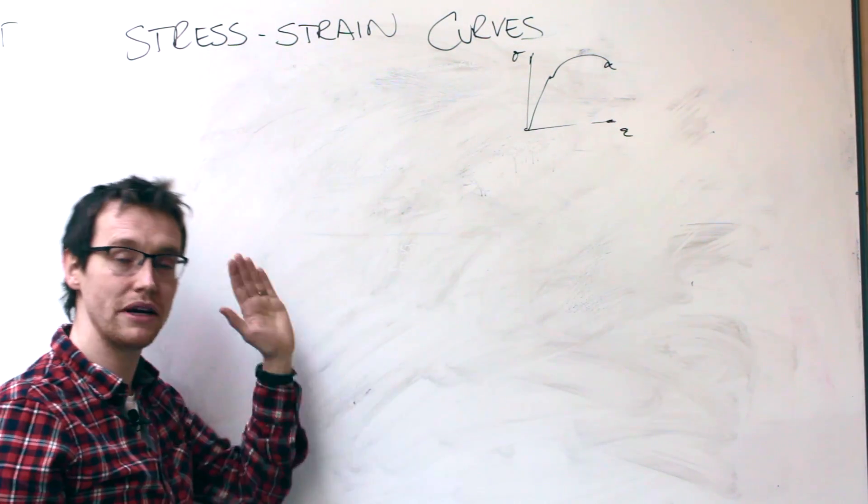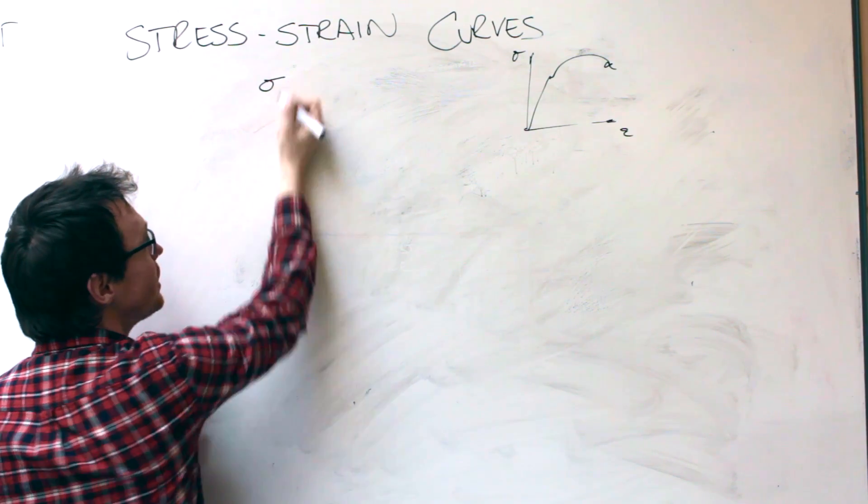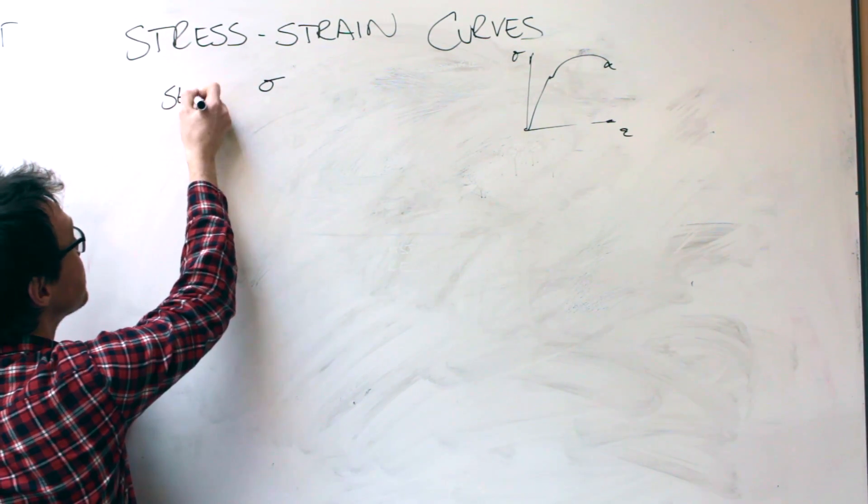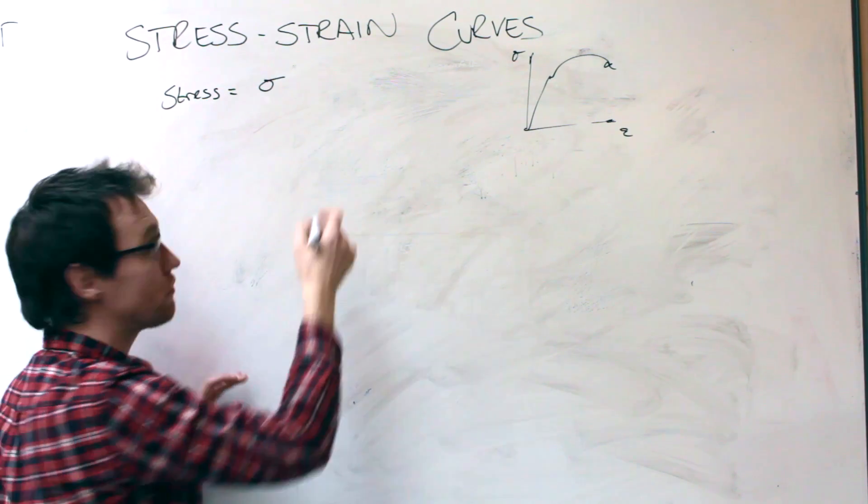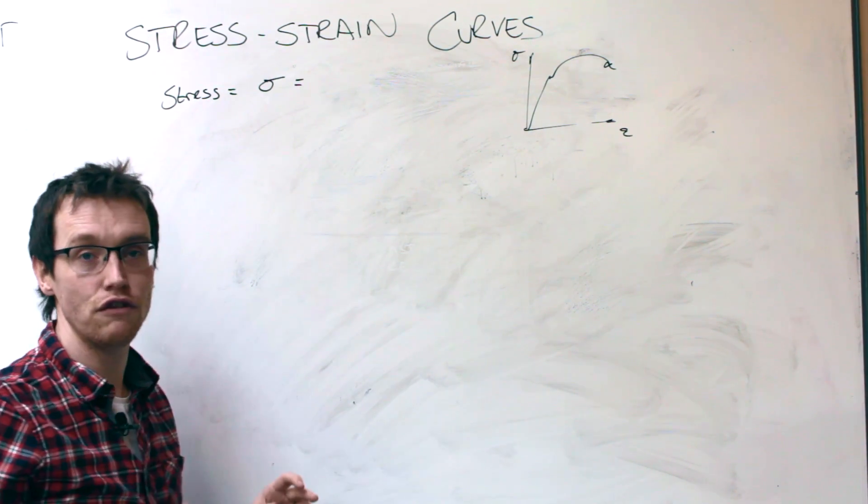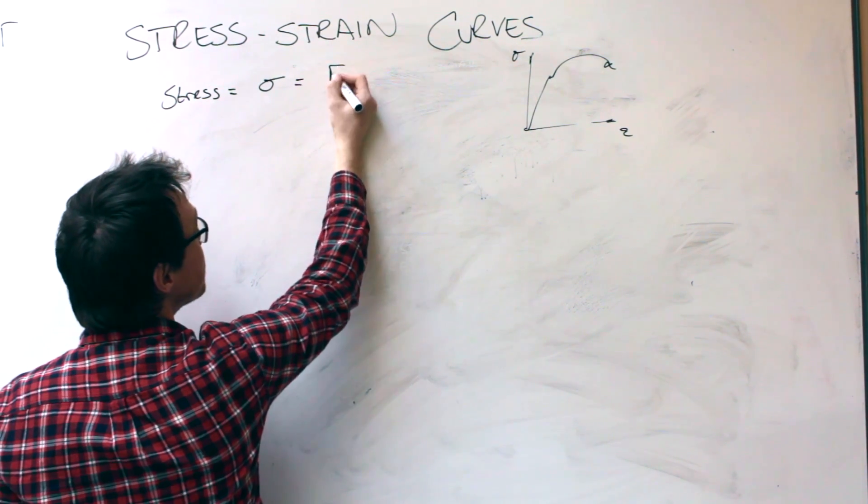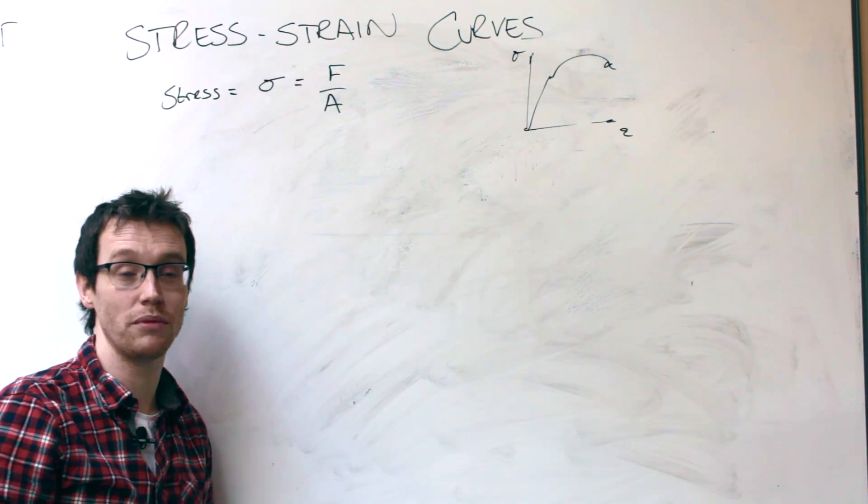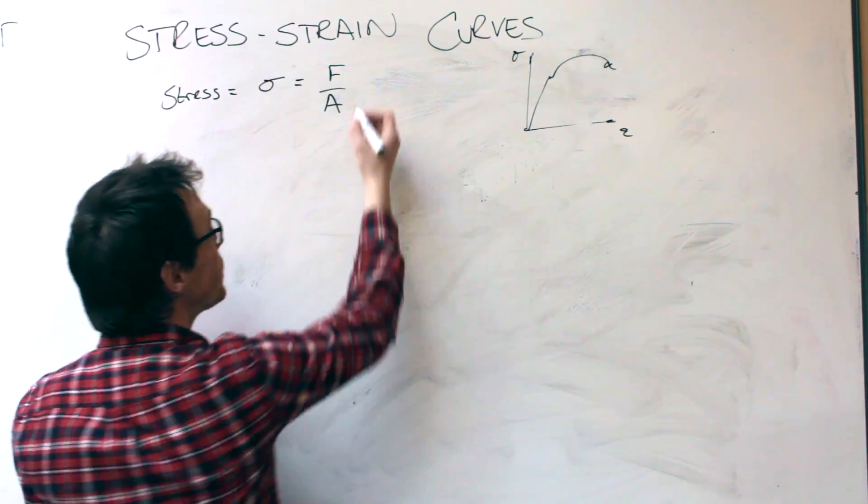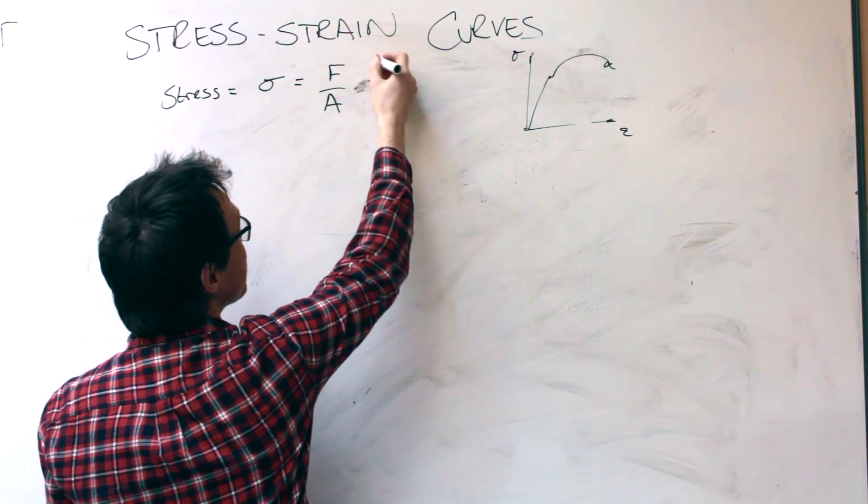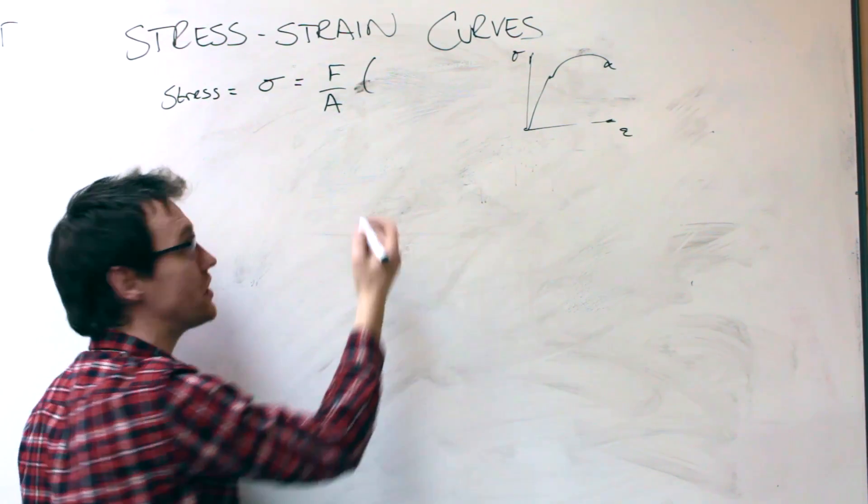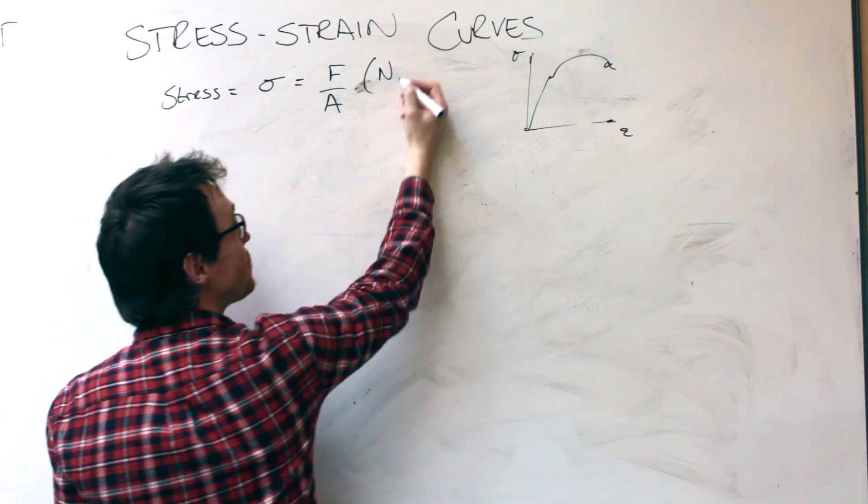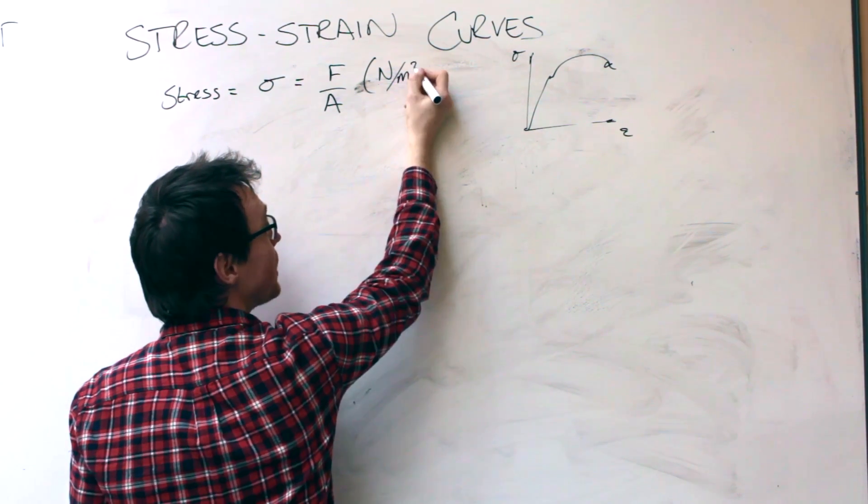So we've already talked about stress being on the y-axis. So stress is given by the Greek letter sigma. And the formula for stress is force divided by area. And you might notice that is exactly the same formula as pressure. And it's the same units too. So force measured in newtons, area is measured in meters squared. So newtons per meter squared.